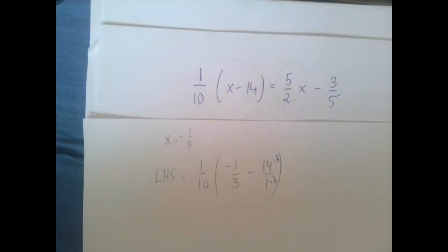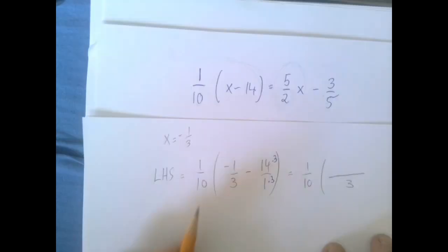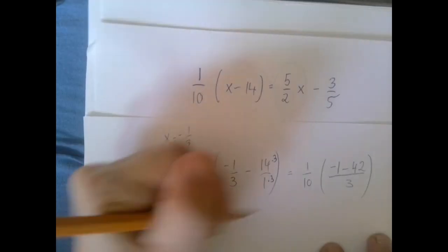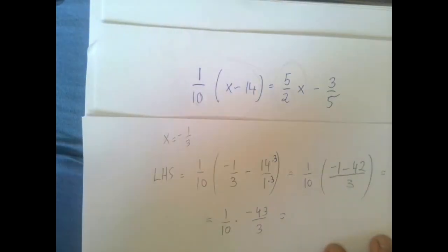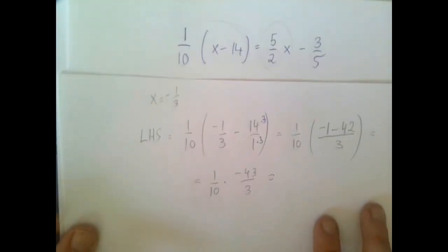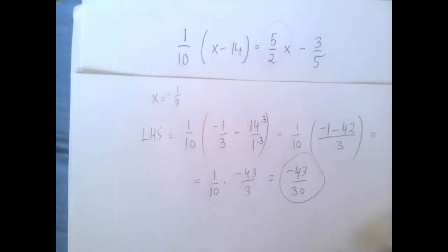And so we get 1 over 10 times negative 1 minus 42, that's 1 over 10 times negative 43 over 3. It's negative 43 over 30. Alright, so let's see the right hand side.